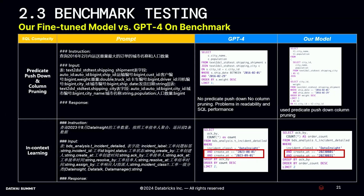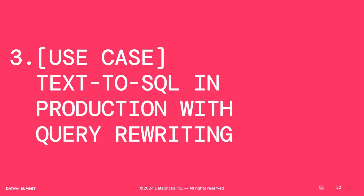Here are benchmark examples. Line one: predicate pushdown and column pruning. Our model performs better than GPT-4 because it uses predicate pushdown and column pruning — it removes irrelevant columns when selecting from the database, which improves query performance. Line two: in-context learning. Our model learns the user's preference for specific data formats — for example, the 'created_at' column format — reflecting user-specific preferences. That concludes He Huan's part.